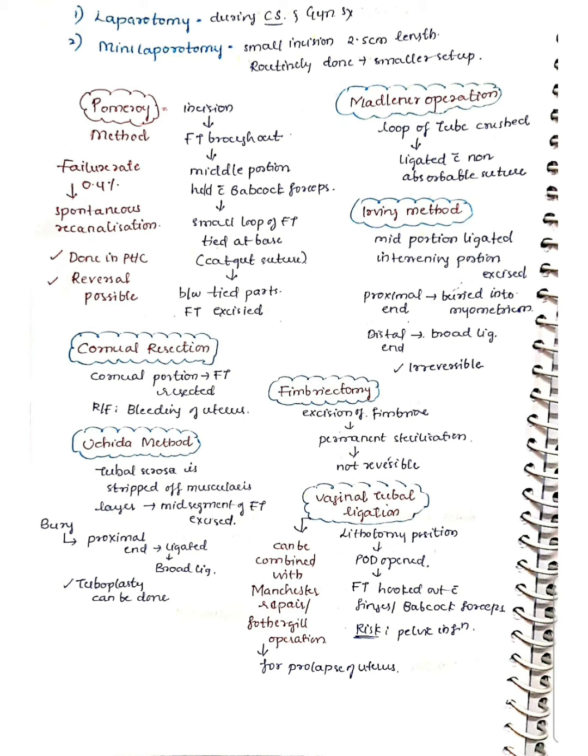In the Uchida method, the tubal serosa is stripped from the muscularis layer of the fallopian tube, the mid-segment is excised, and the proximal end is buried into the broad ligament after ligation. Tuboplasty can be done with this method. The mini-laparotomy procedures are: Pomeroy's, Madlinus, Irving's, corneal resection, fimbrectomy, and Uchida method.